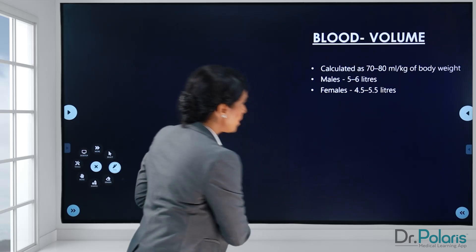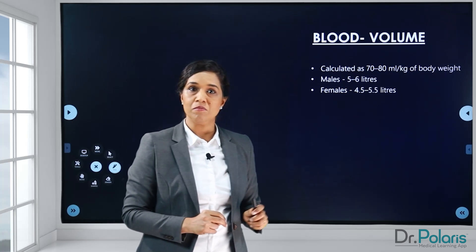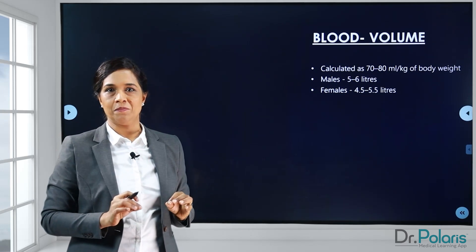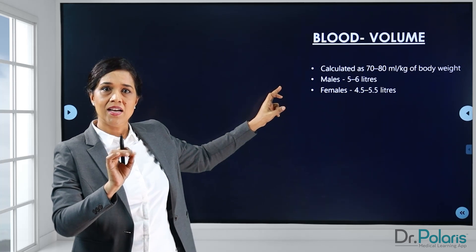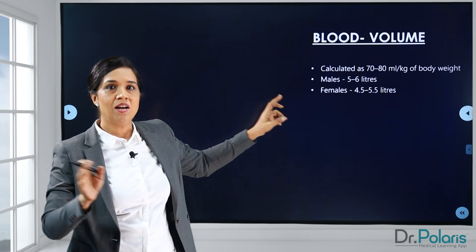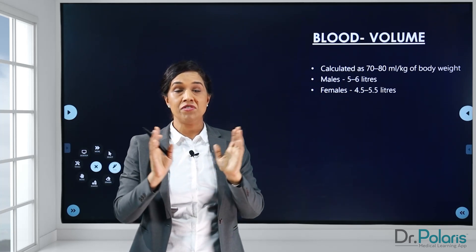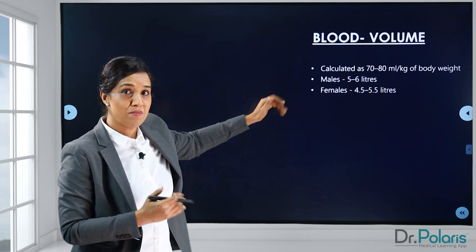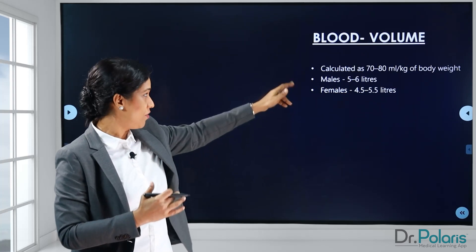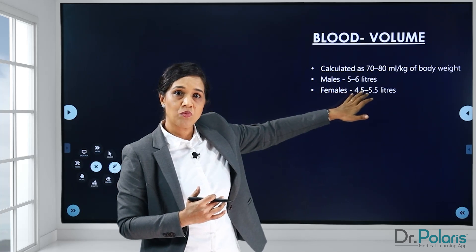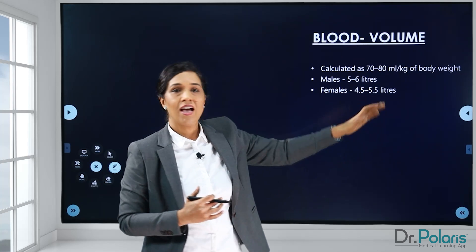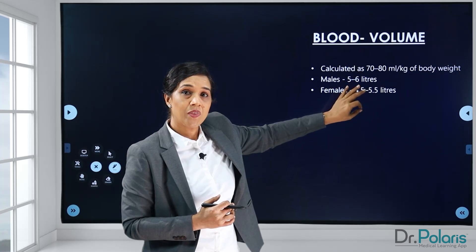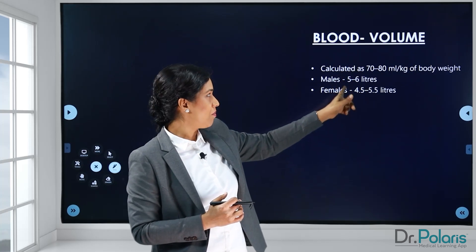Going into further detail about blood, blood volume is calculated as 70 to 80 ml per kilogram body weight. That one sentence leads you to an understanding that blood volume is related to surface area — more the size, more the blood volume. Looking at normal blood volume in a male and a female: males have a blood volume of 5 to 6 liters and females have a blood volume of 4.5 to 5 liters, so blood volume in females is lesser than in males.